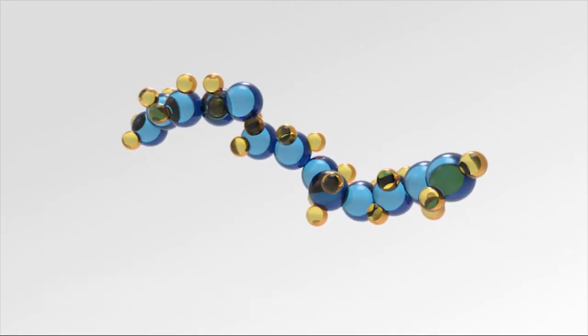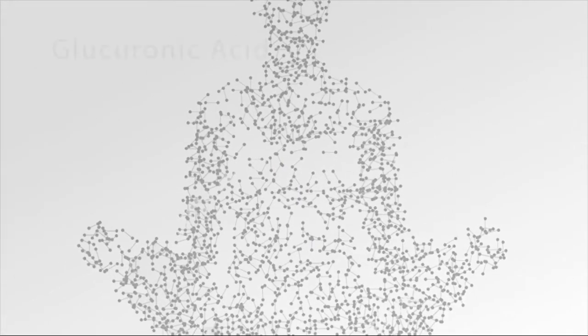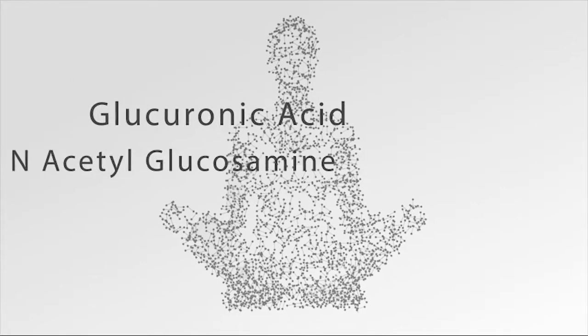Hyaluronic acid is an organic bi-polymer naturally produced in the human body. The molecule is made up of a repetitive sequence of glucuronic acid and N-acetyl glucosamine.